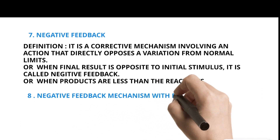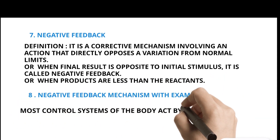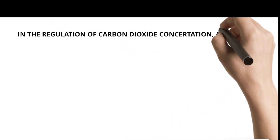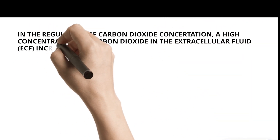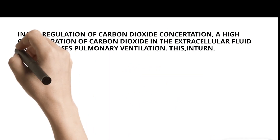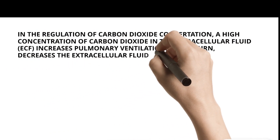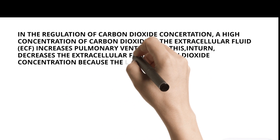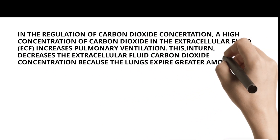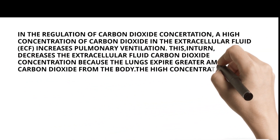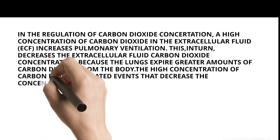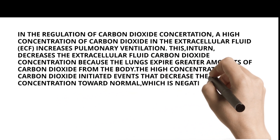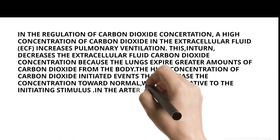Negative Feedback Mechanism with Examples: Most control systems of the body act by negative feedback. In the regulation of carbon dioxide concentration, a high concentration of carbon dioxide in the extracellular fluid (ECF) increases pulmonary ventilation. This, in turn, decreases the extracellular fluid carbon dioxide concentration because the lungs expire greater amounts of carbon dioxide from the body. The high concentration of carbon dioxide initiated events that decrease the concentration toward normal, which is negative to the initiating stimulus.